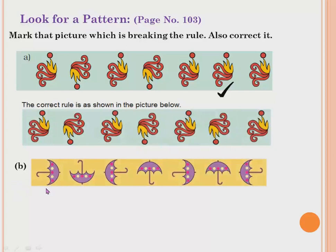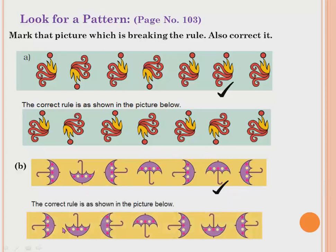The second pattern has umbrellas. This umbrella is facing one side, then it takes one-fourth turn, then another one-fourth turn, and another. After one-fourth turn it should come down. So which is wrong? This one. The correct rule: from here, one-fourth turn — it should go clockwise, but it went anti-clockwise. So the correct direction should come down, not up.